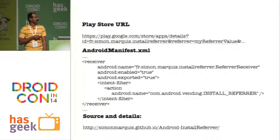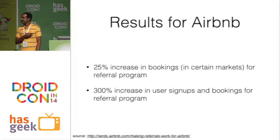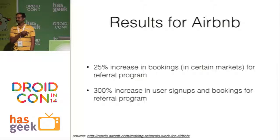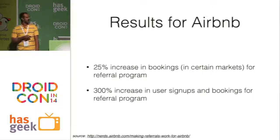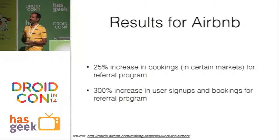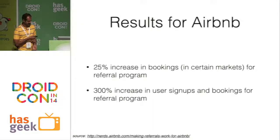What has this done for Airbnb? It got a 300% increase in user signups just because of this small change, and a 25% increase in bookings. That's what deep linking does — you make your customers happy and you get your users back to your app again and again.